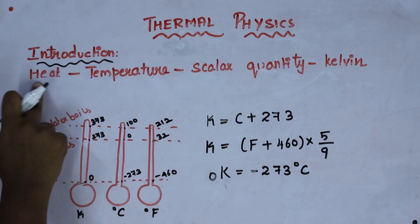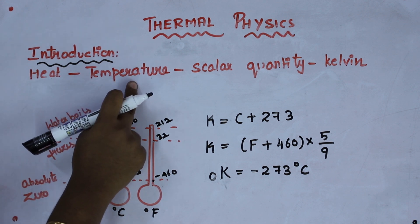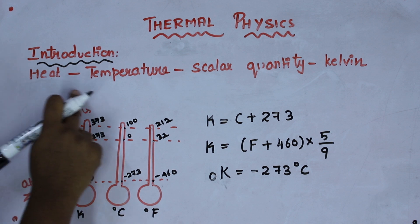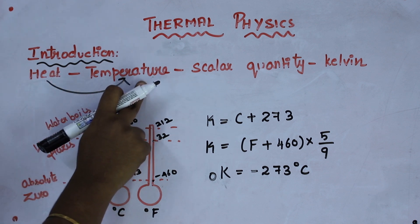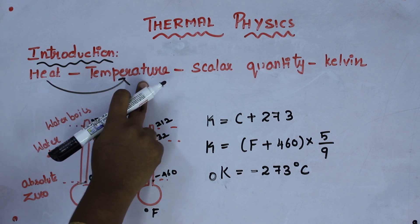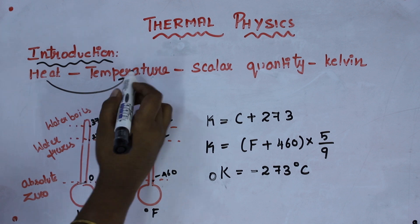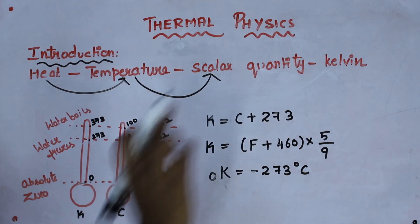Thermal is nothing but heat. So how we will get heat? Without temperature we cannot analyze the heat. It depends upon the temperature. Temperature has a property that determines the direction of flow of heat. As it determines the direction, the temperature is said to be a scalar quantity.